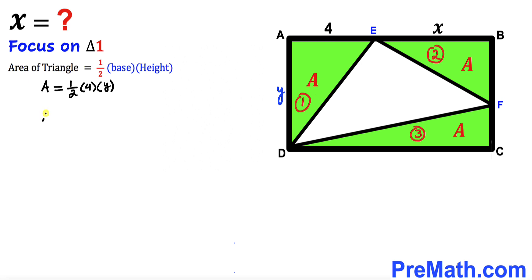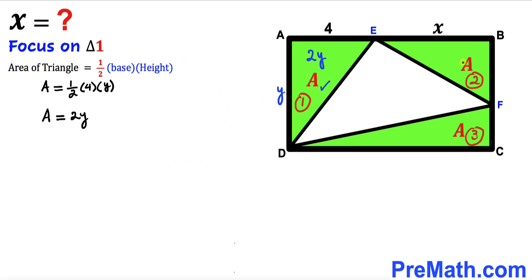The area of this triangle is uppercase A equals one half times 4 times Y. If we simplify, uppercase A turns out to be equal to 2 times Y. So the area of triangle 1 is 2Y. Since the area for all three triangles is identical, the area of each triangle is 2Y.